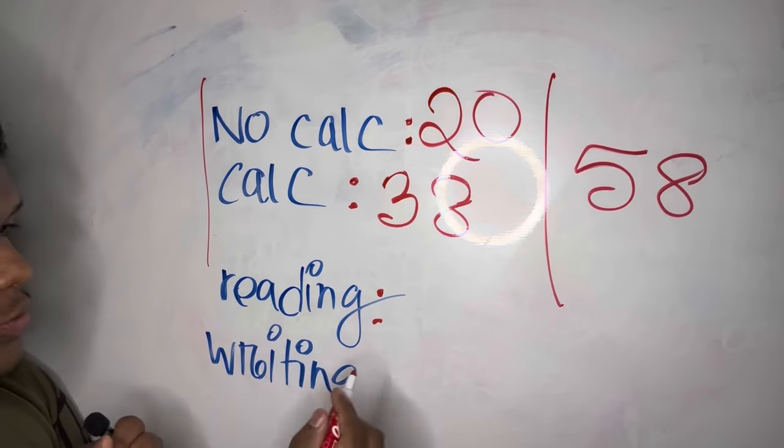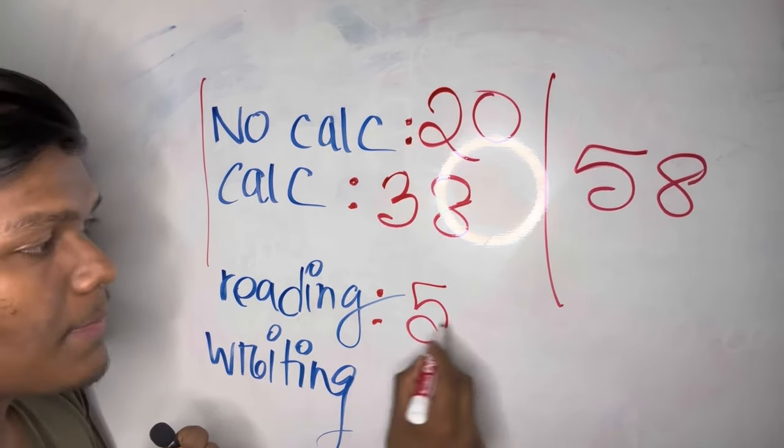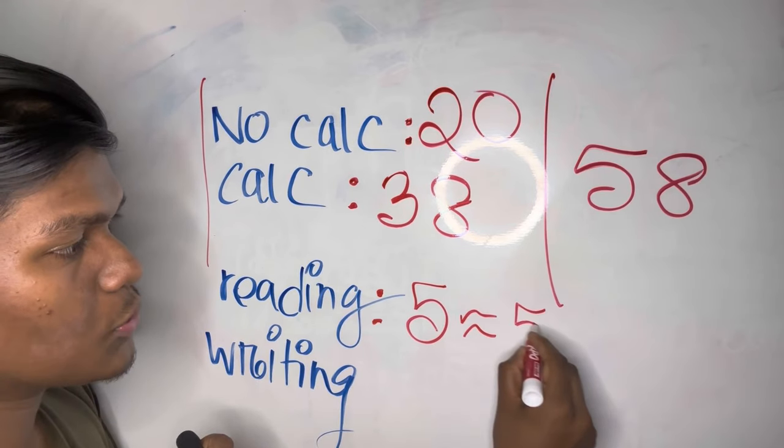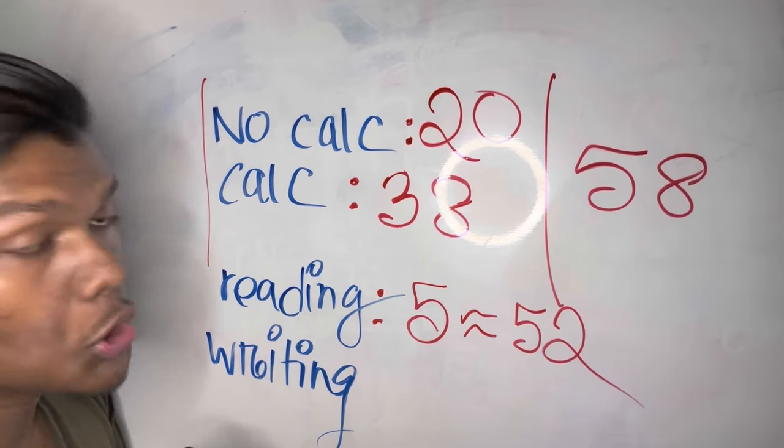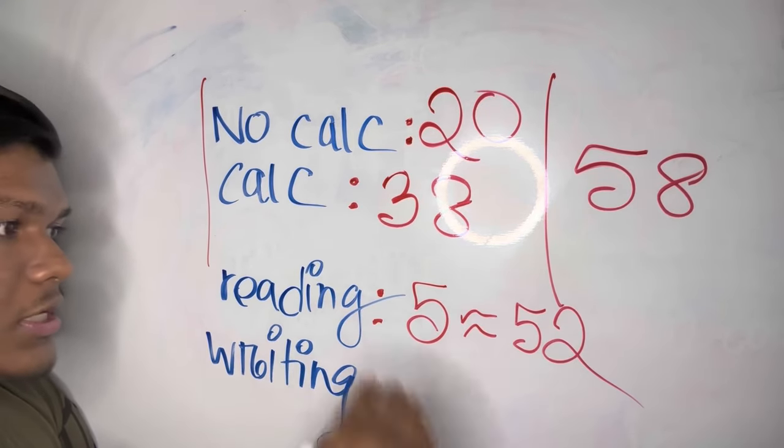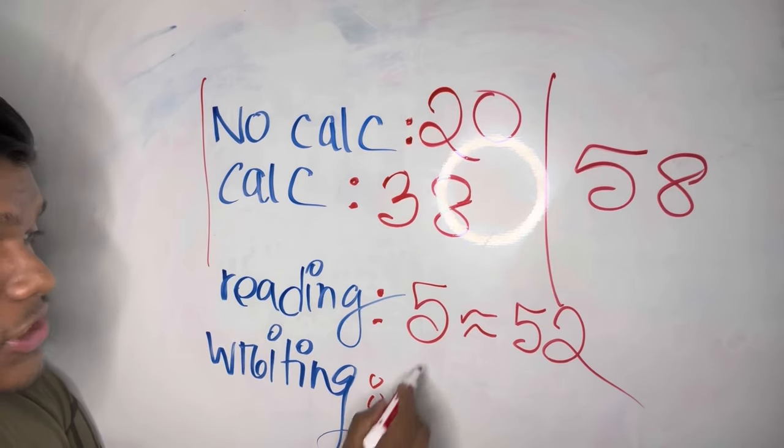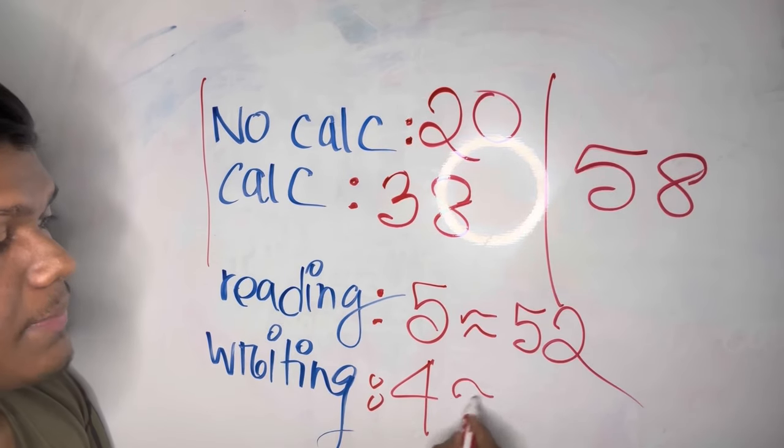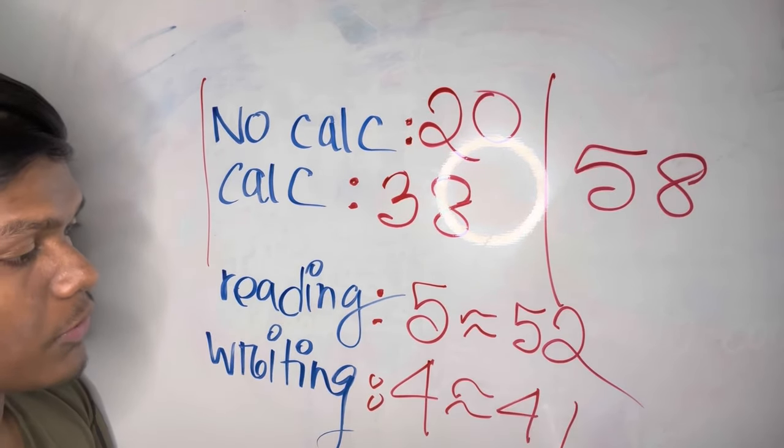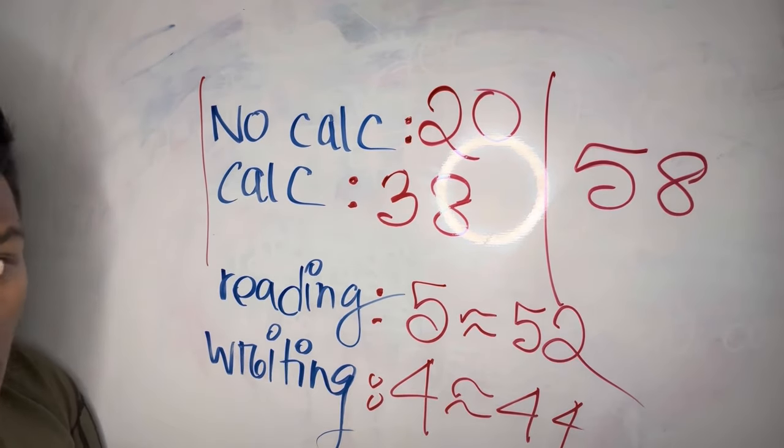In the reading section, you'll get 5 passages, and those 5 passages will have 52 total questions, not per passage but total. In writing, you'll be getting 4 passages, and those 4 passages will have total 44 questions. So in total, you'll have 96 questions.